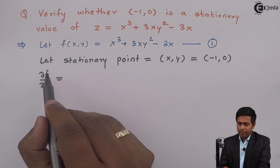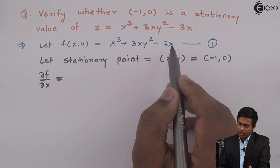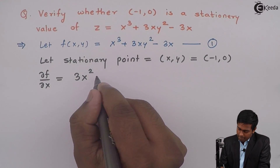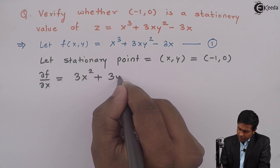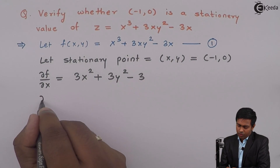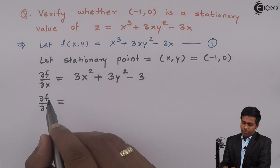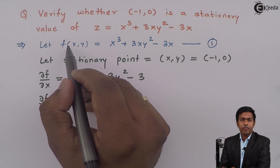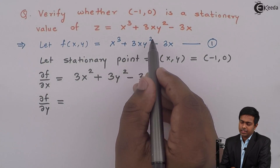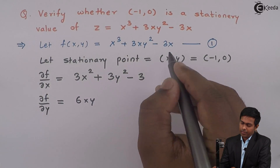∂f/∂x is the partial differentiation of f with respect to x. So here we get 3x square, plus 3y square, and minus 3. Next we find ∂f/∂y by partially differentiating f with respect to y. The first term gives 0, the second term gives 3x times 2y, which is 6xy, and the last term gives 0.